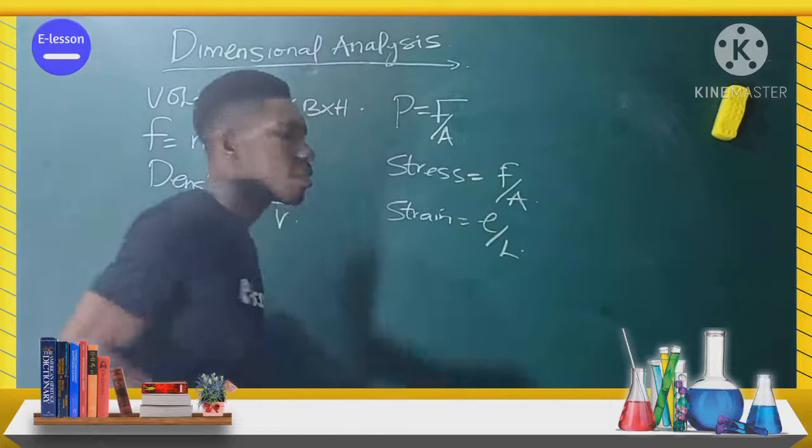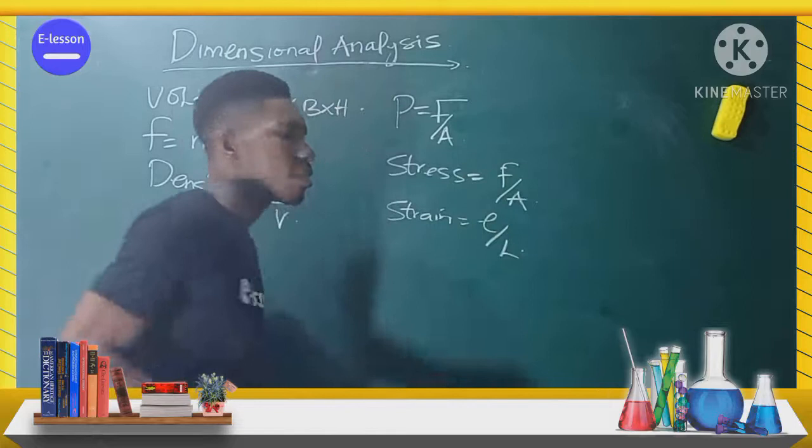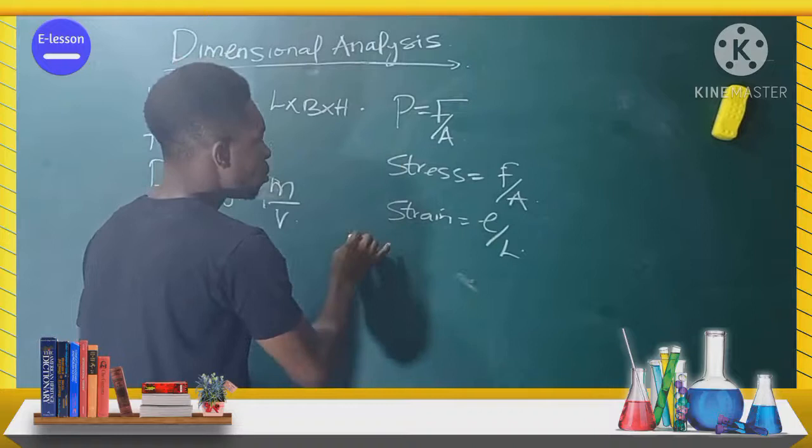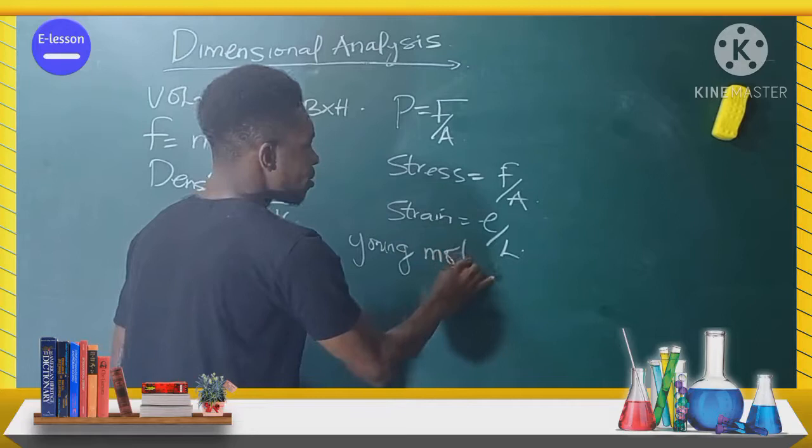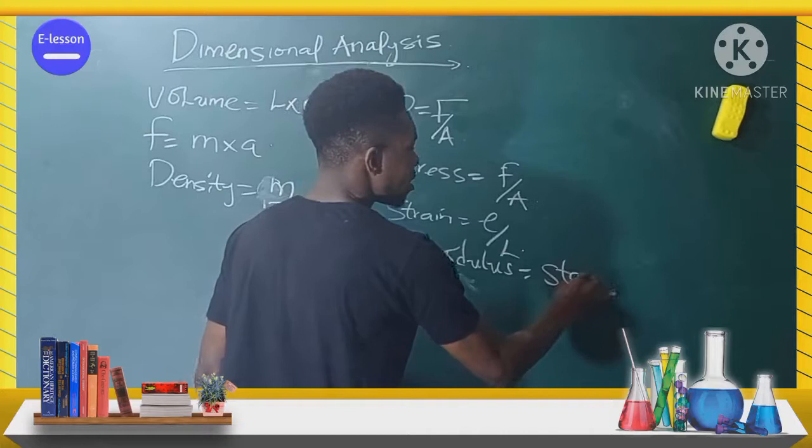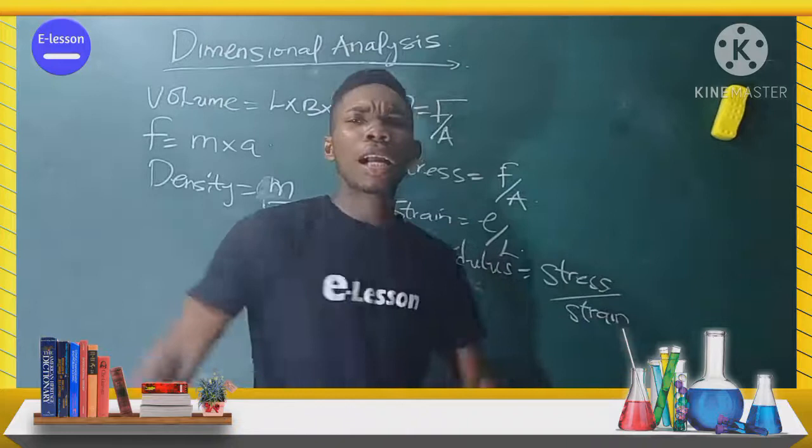Strain is extension over length. Then we have Young's modulus. Young's modulus is equal to stress over strain. Some of you might be thinking, how am I going to memorize all these formulas?